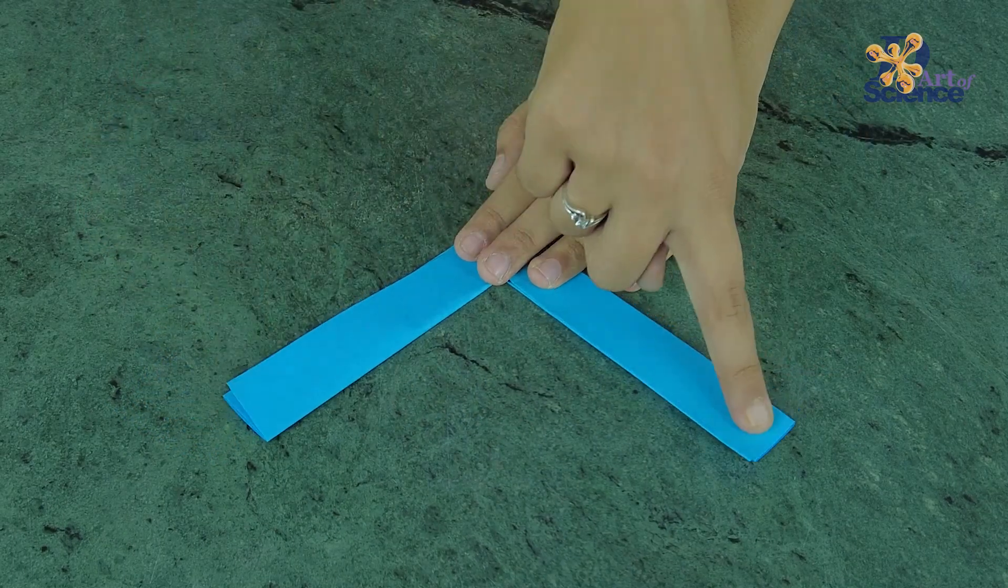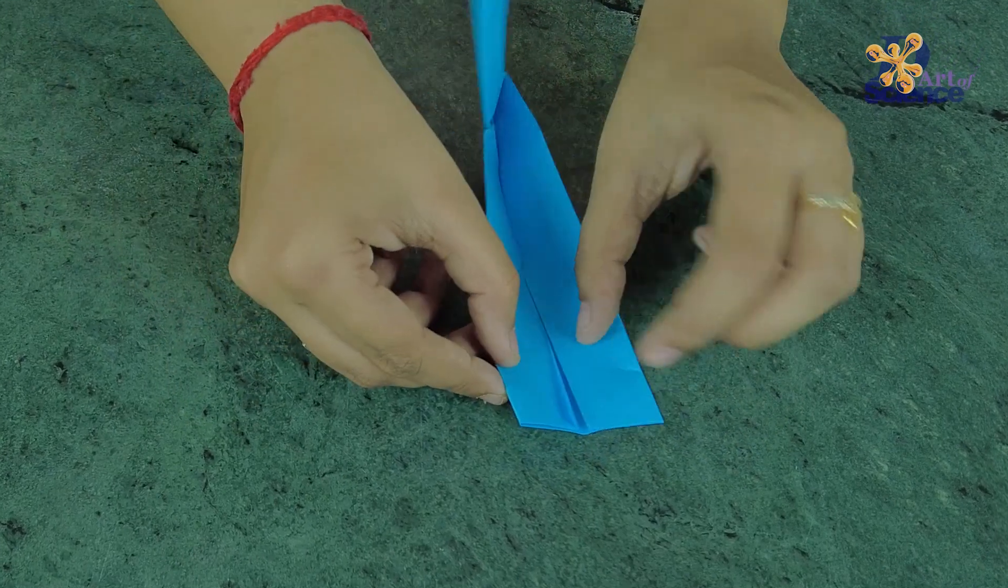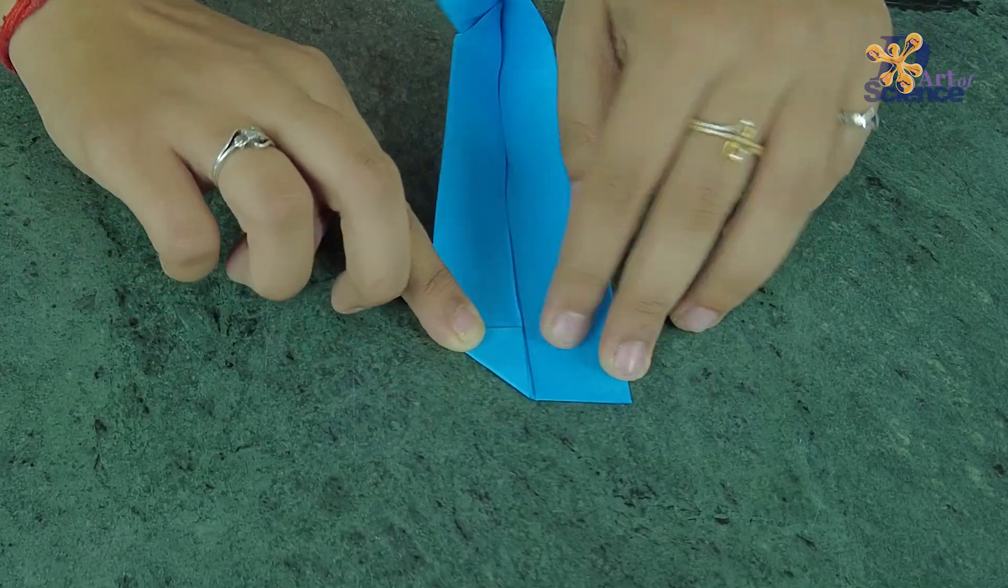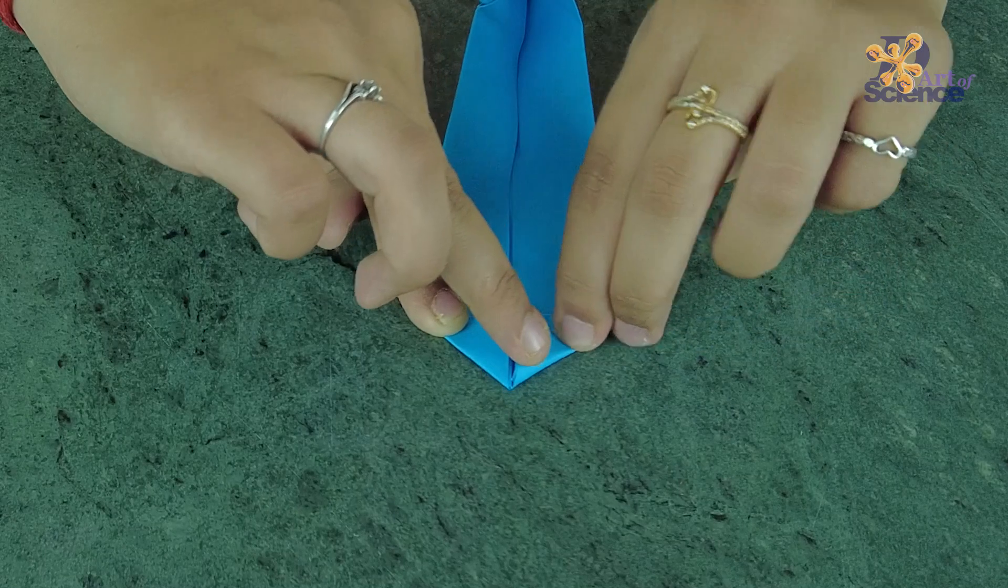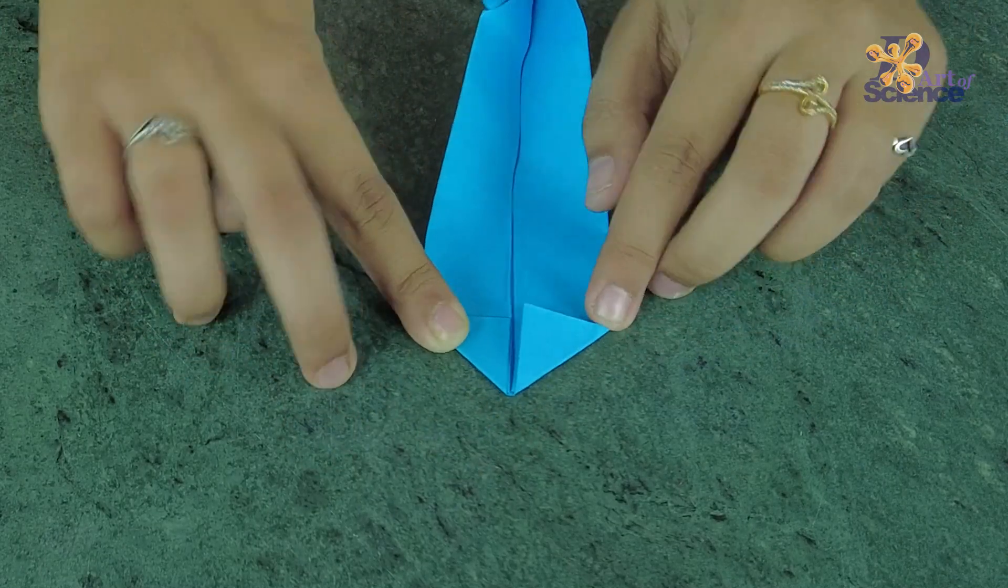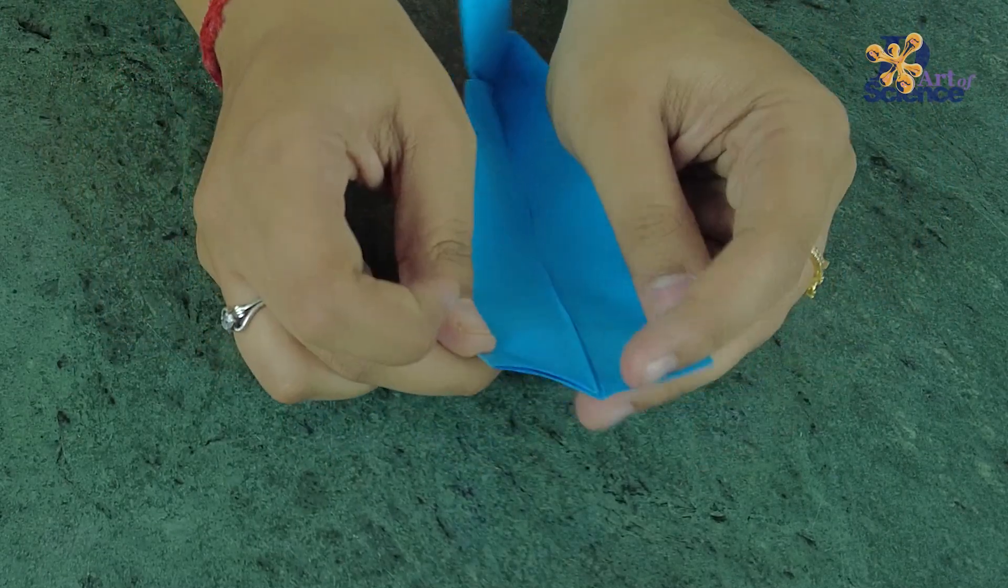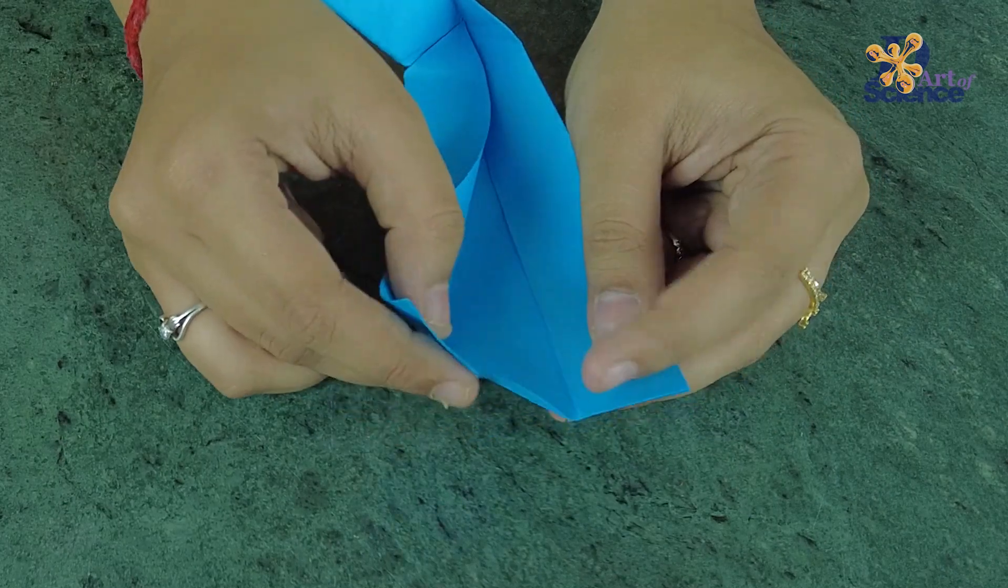Finally, for the ends of the boomerang, open up the strip and fold the edges into triangles. Open one of the triangles and fold it inside out.